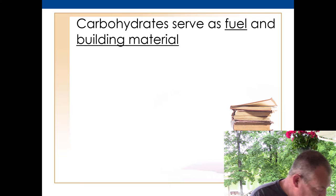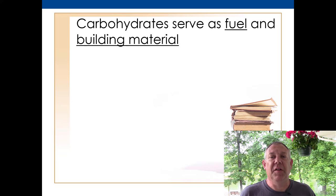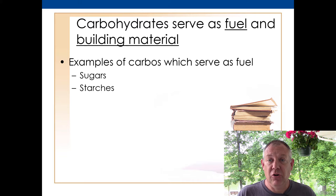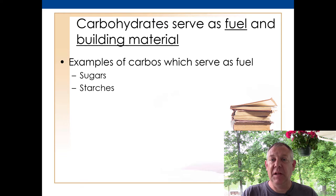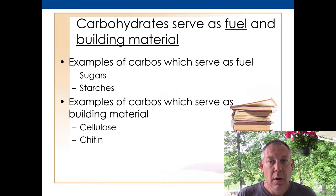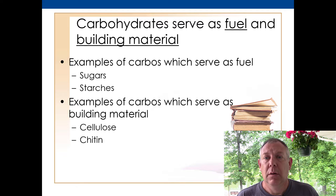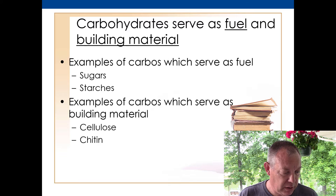Carbohydrates have two broad functions in living organisms: they act as fuel and they act as building material. Sugars and starches are carbohydrates used for fuel — you break those bonds, release energy, capture it, and use it to build your own molecules. Carbohydrates can also have structural properties. For example, cellulose found mainly in plants is a structural carbohydrate, and chitin found in animals and fungi also has a structural function.